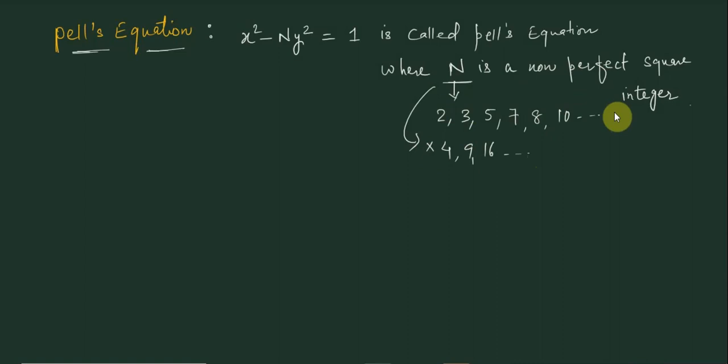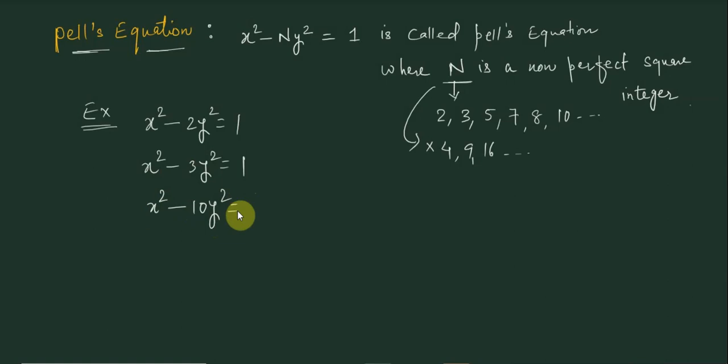For example, Pell's equations include: x² - 2y² = 1, x² - 3y² = 1, x² - 10y² = 1, and so on.